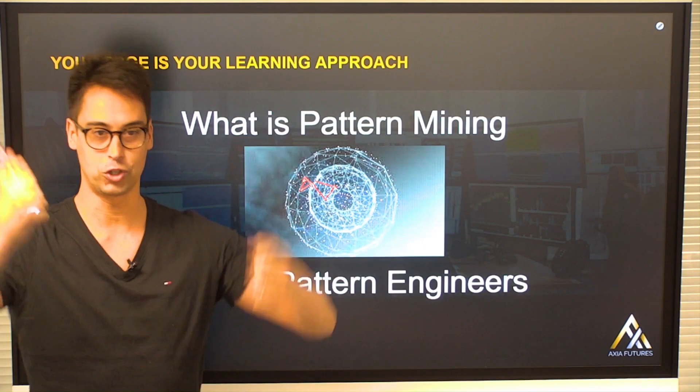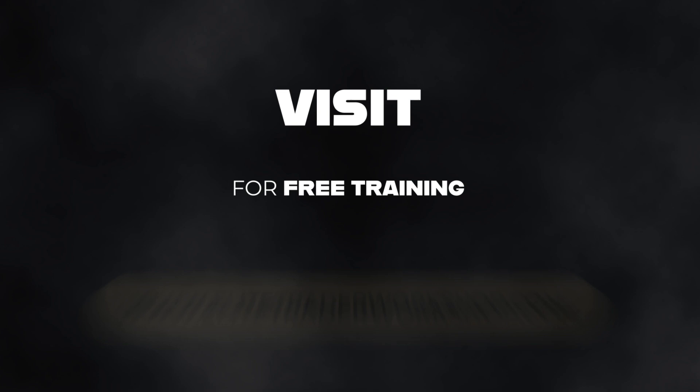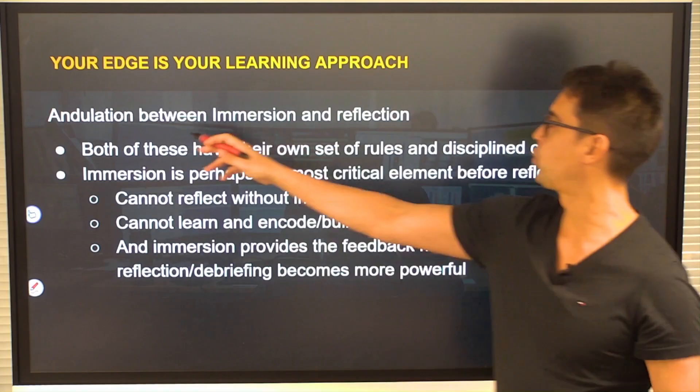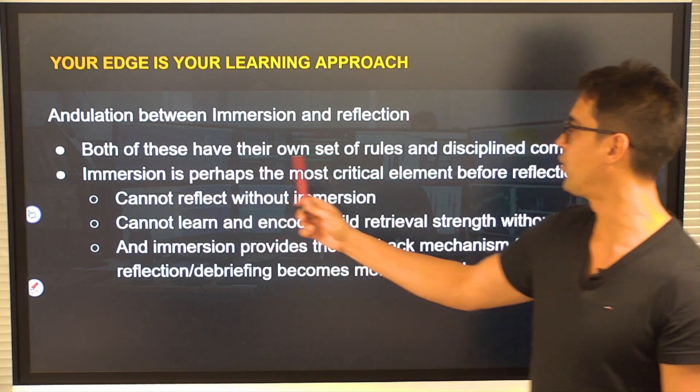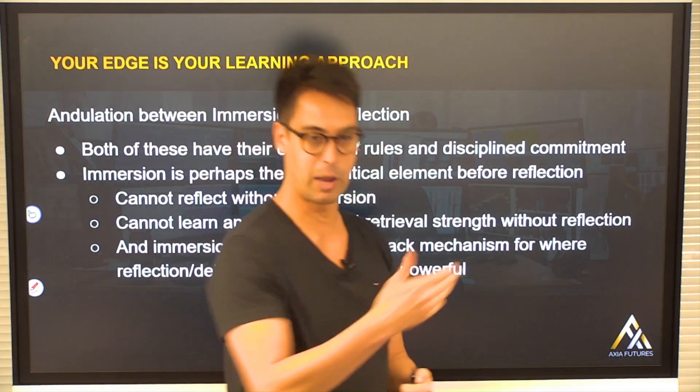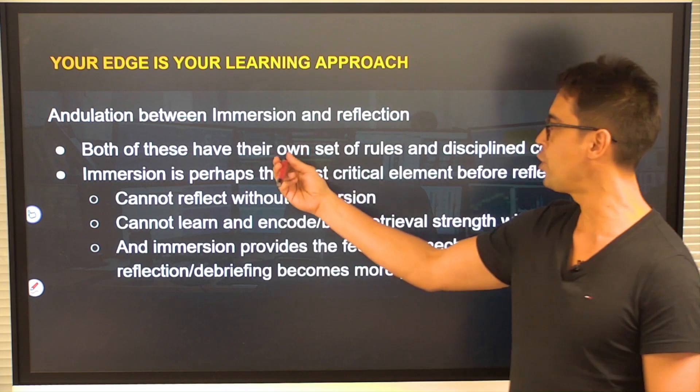As you start connecting journals, one journal from one day links to another journal three months down the line and you draw this link. So your edge is your learning approach, and it's an undulation — straight from Josh Waitzkin — between immersion and reflection. Both of these have their own set of rules and discipline. Immersion is screen time. Reflection is what you do after screen time, especially on the weekend when you're consolidating. The immersion rule set is: once you've done your planning, how consistent is your game time at your desk?